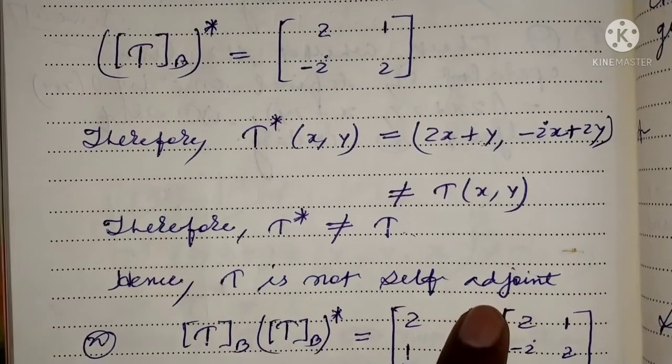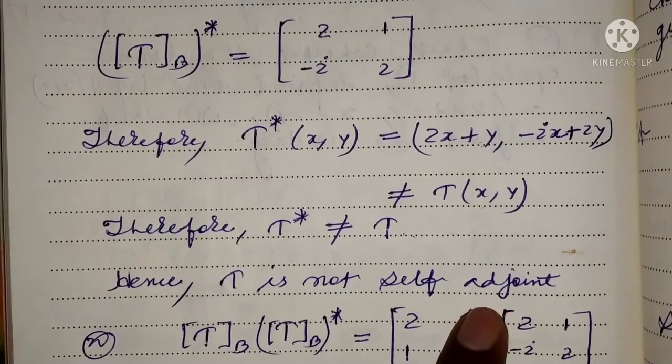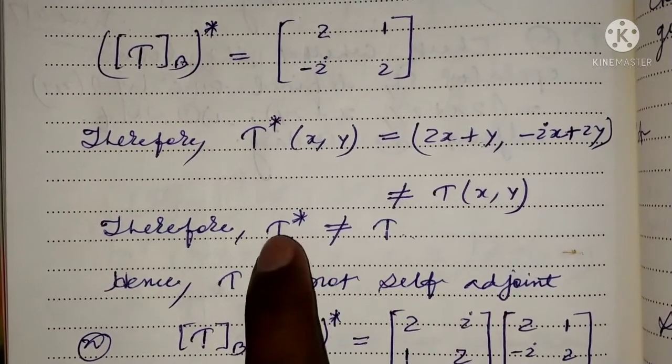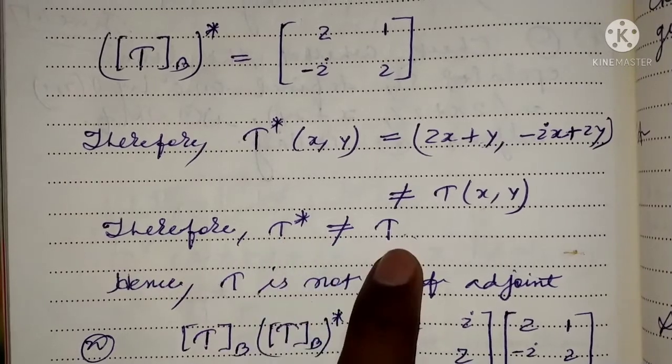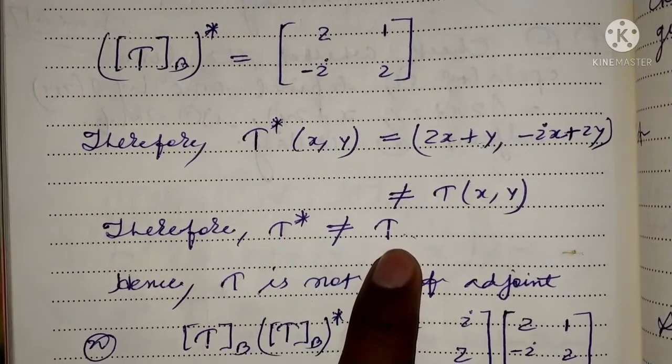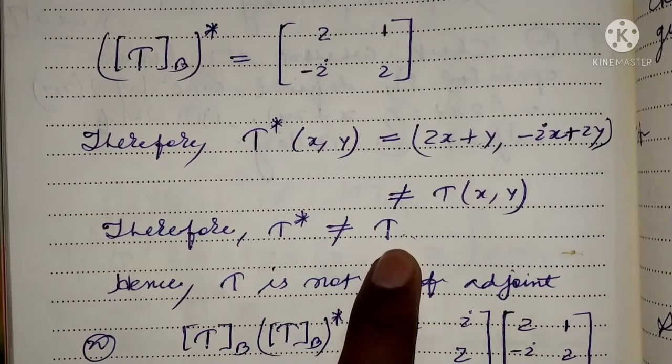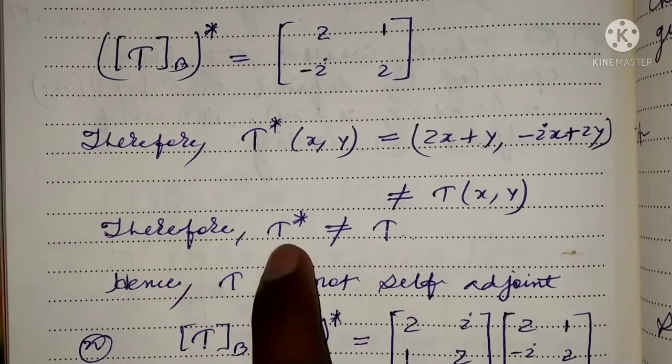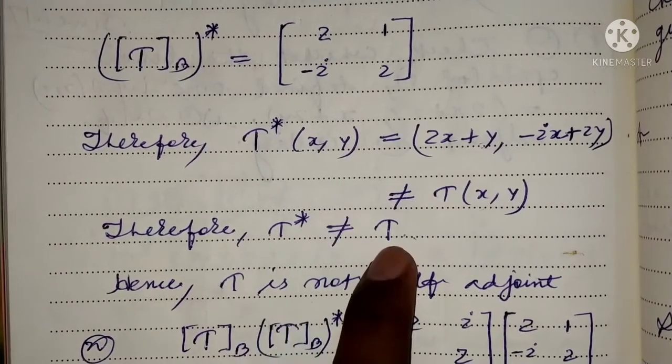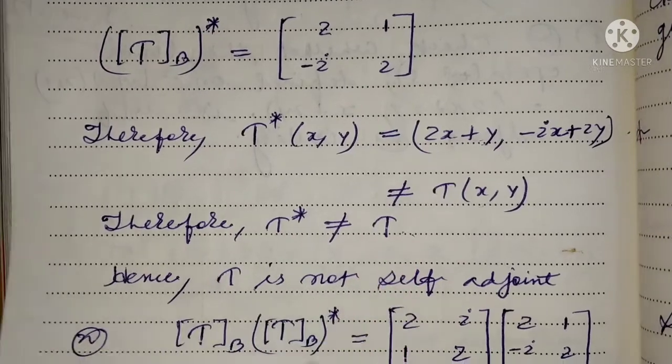Hence, T is not self-adjoint. For T to be self-adjoint, t* must equal T, and the adjoint of T must equal T.